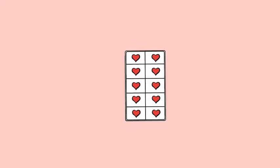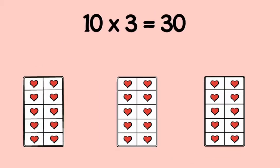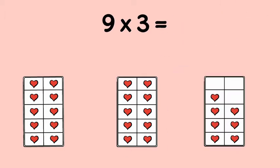Now try 9 × 3. You know 10 × 3 is 30. Take away one group of 3, and you have 9 × 3. Take a look. That's 27.